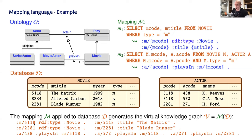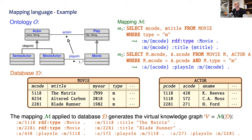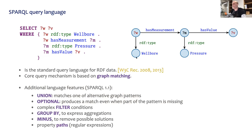If we execute this mapping against these datasets, the mapping generates a number of triples — it generates the virtual knowledge graph. For example, 5118 is of type Movie because the M_code is this one, and we create the RDF type statement with predicate RDF:type and object Movie. The same for 2281. And similarly for the title. The filter in the SQL query means we don't care about the 8234 movie entry in the table.